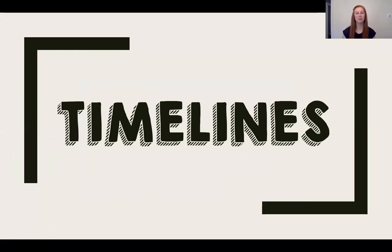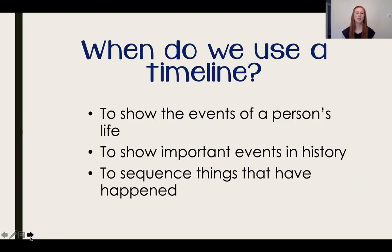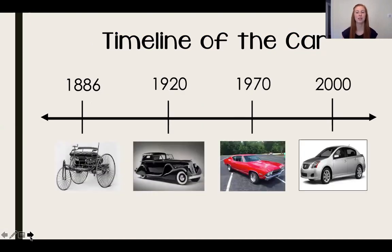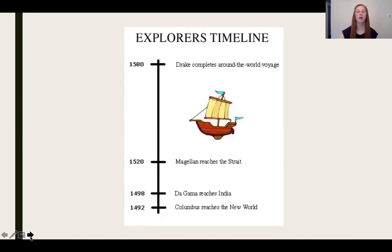We are going to be talking about timelines again this week. So let's take a look at all of the things that we learned about timelines last week. We talked about how we use a timeline to show the events of a person's life, to show important events in history, or to sequence things that have happened. We also talked about how we need to make sure that we have a title, like this timeline does — Explorer's Timeline — so it helps us know what the timeline is about.